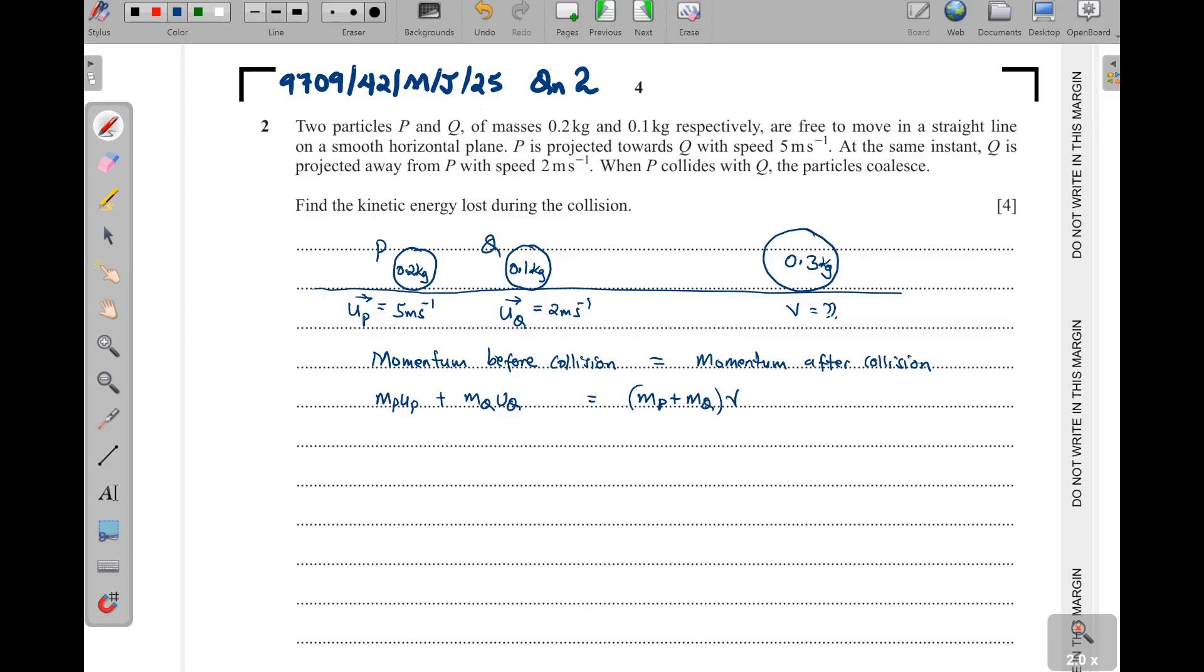So, what is the mass of P? 0.2, then times 5. And then this one is 2 times 0.1. Then this one will be 0.3V. So, meaning V is going to be, this one will give us 1, then plus 0.2, that is 1.2. We divide by 0.3. That means that this V here is going to be equal to 4 meters per second.